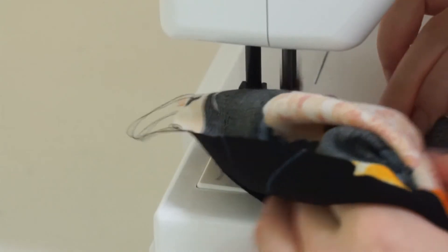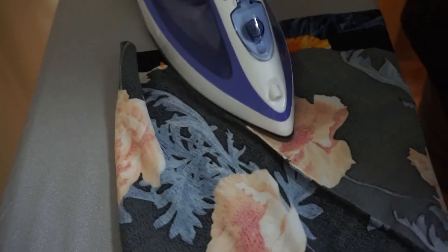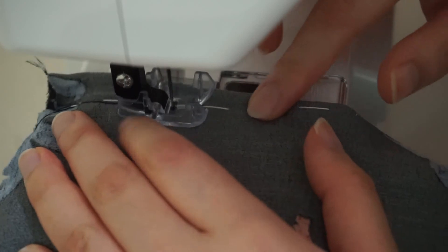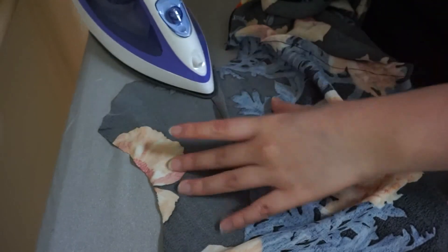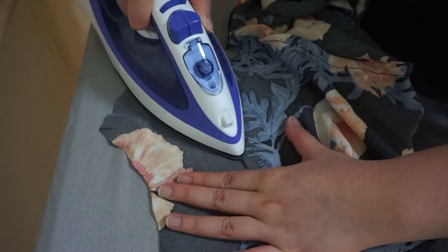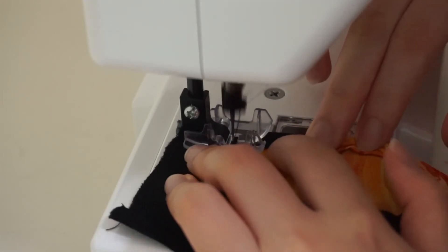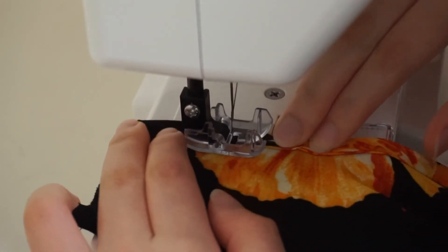Sew the diagonal seams together with the French seam. Iron the seam down. Sew all the darts together. Pull the marking stitches out after sewing and iron all the darts flat. Using the same technique on the back neckline, bind the front neckline and the armholes with the bias binding tape.